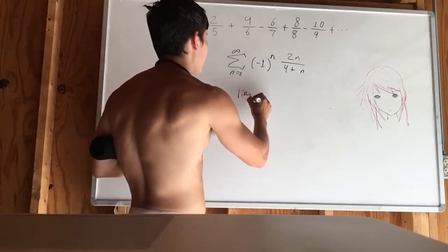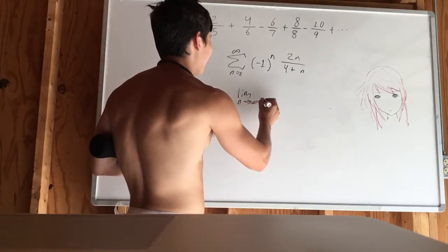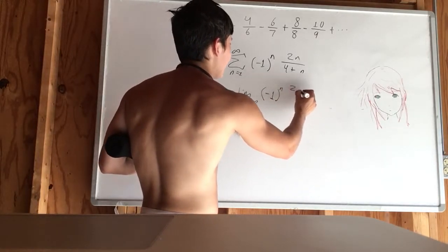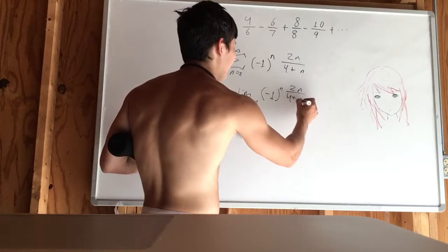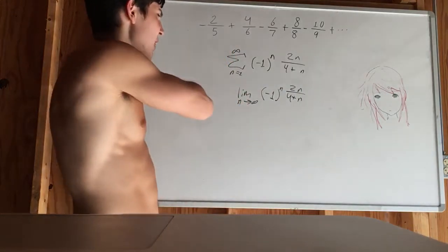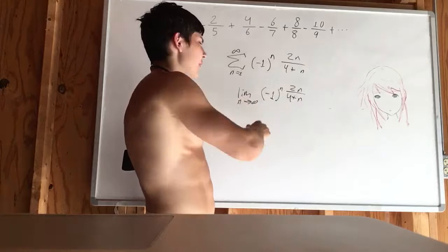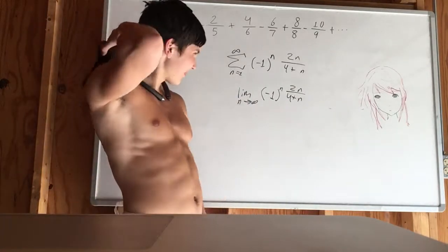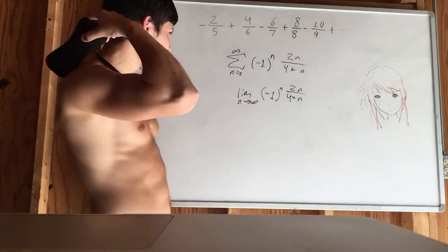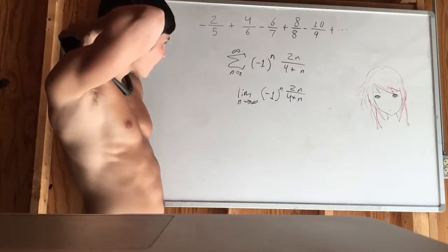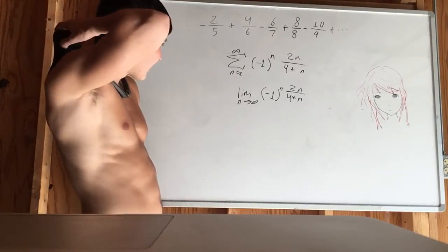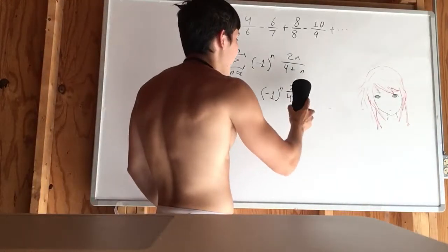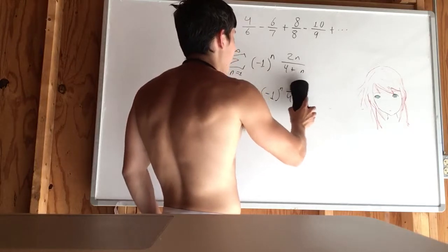So let's try this. We take the limit as n approaches infinity of (-1)^n times 2n over 4 plus n. This would give us infinity over infinity if we plugged it in there. So we can use L'Hopital's rule, or we could divide by n, which would be kind of the same thing. It would give you the same results.